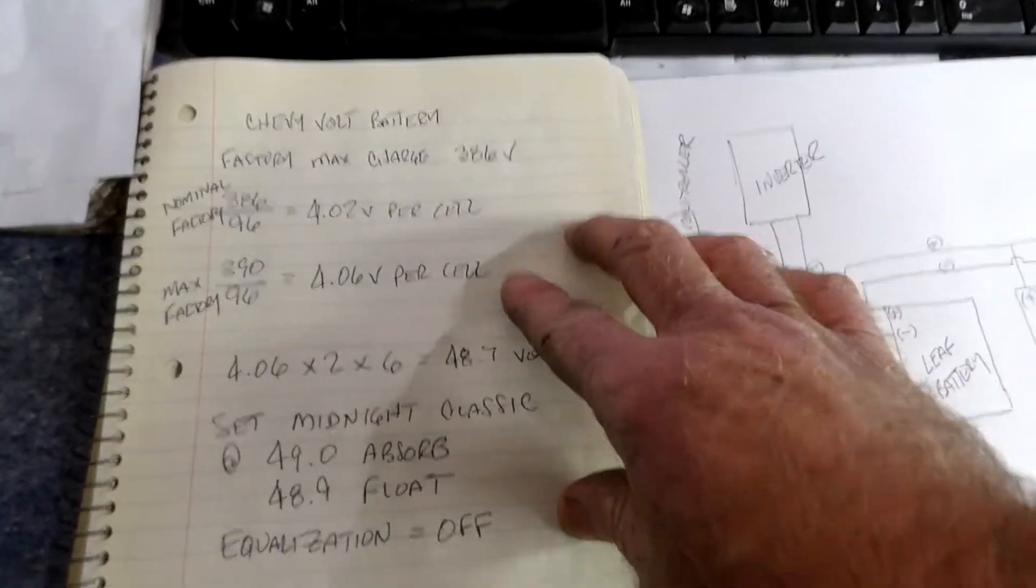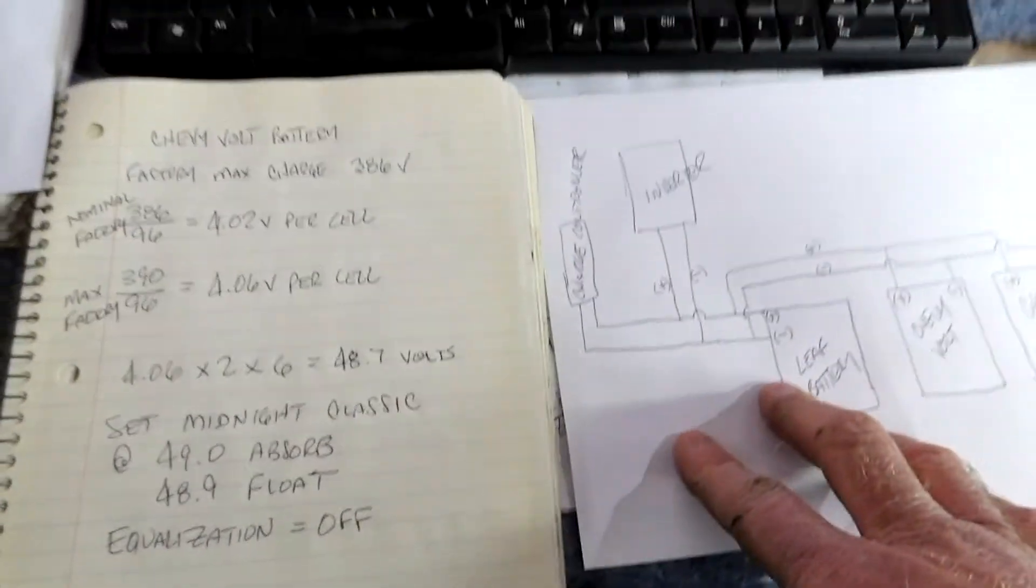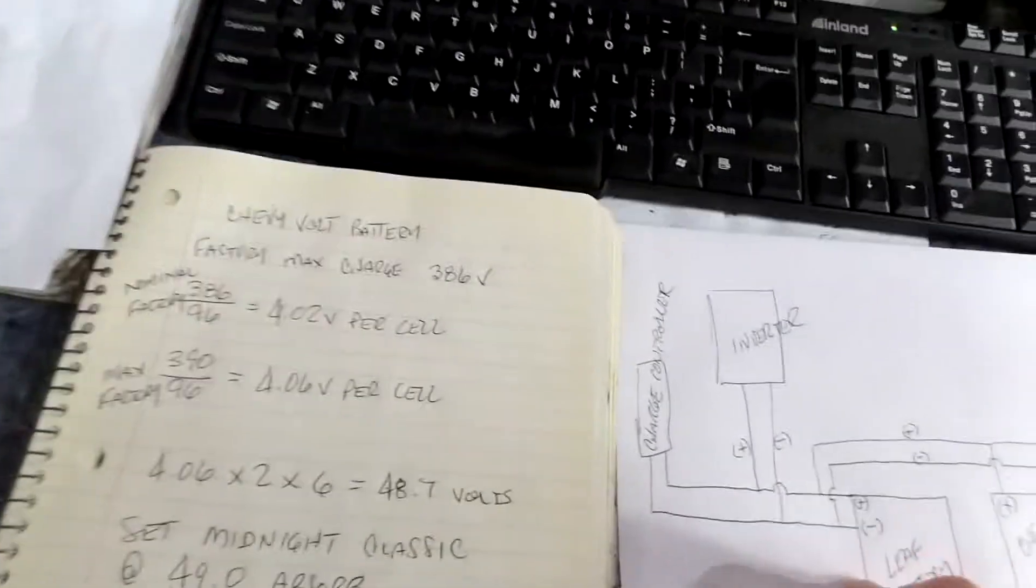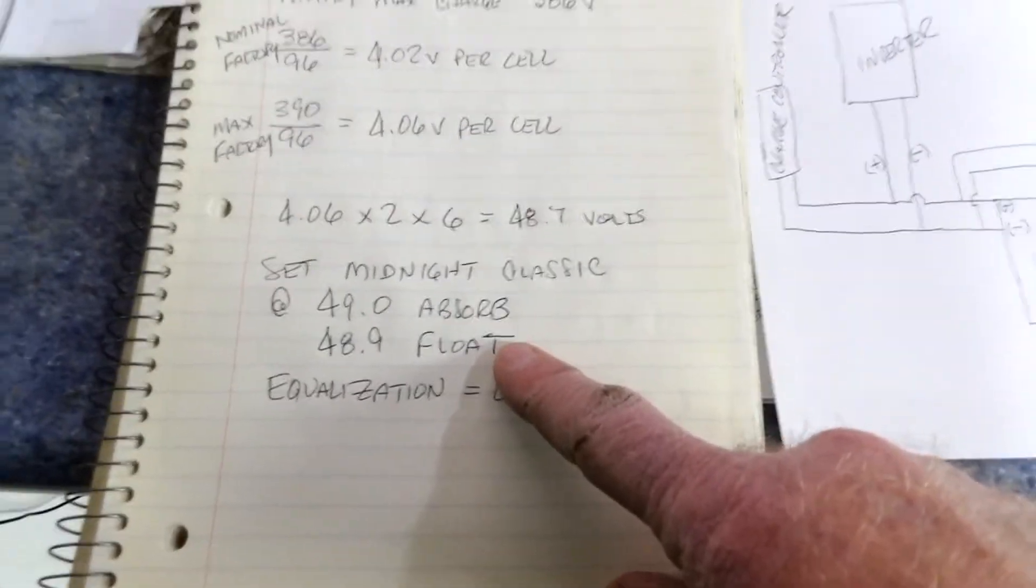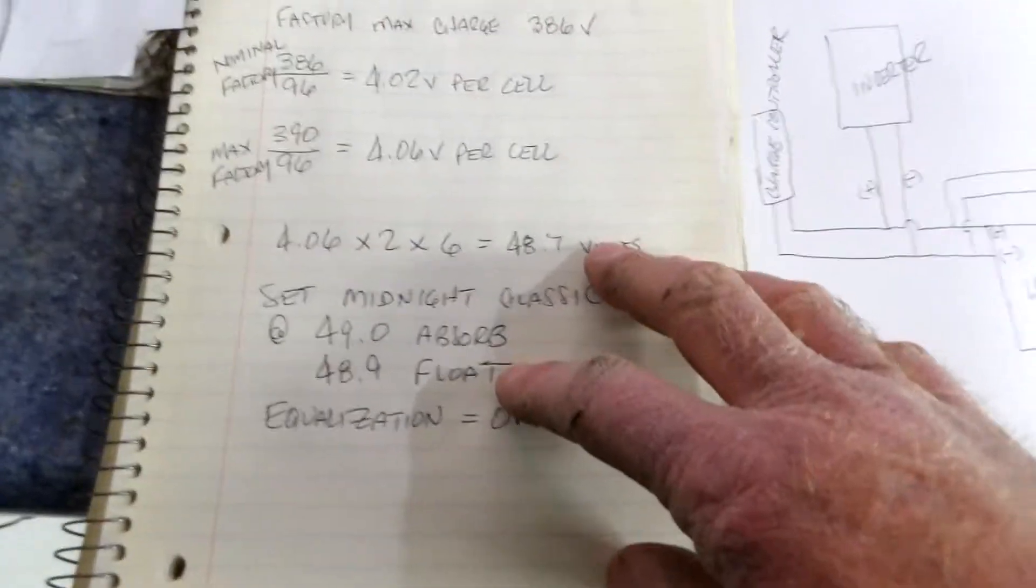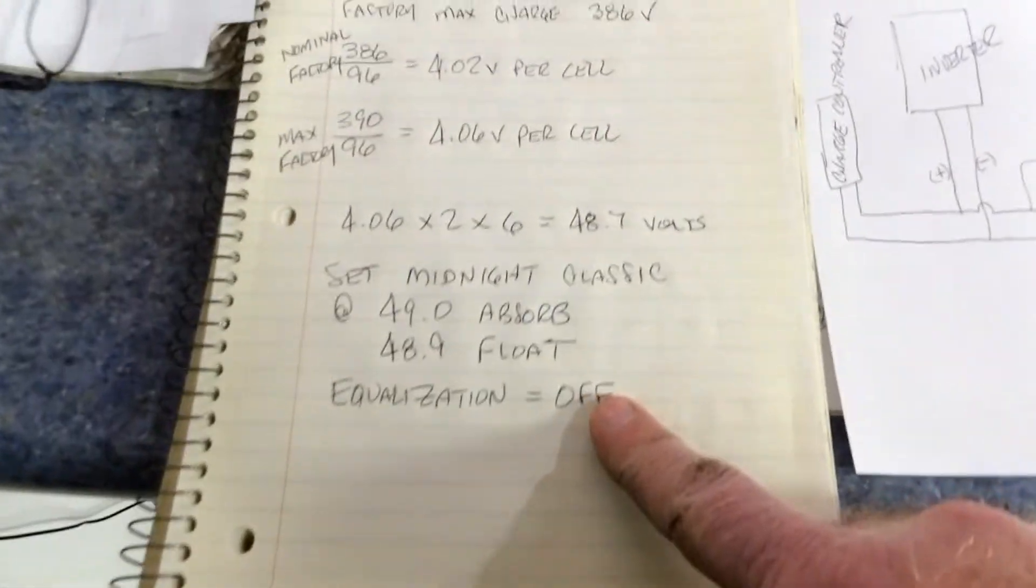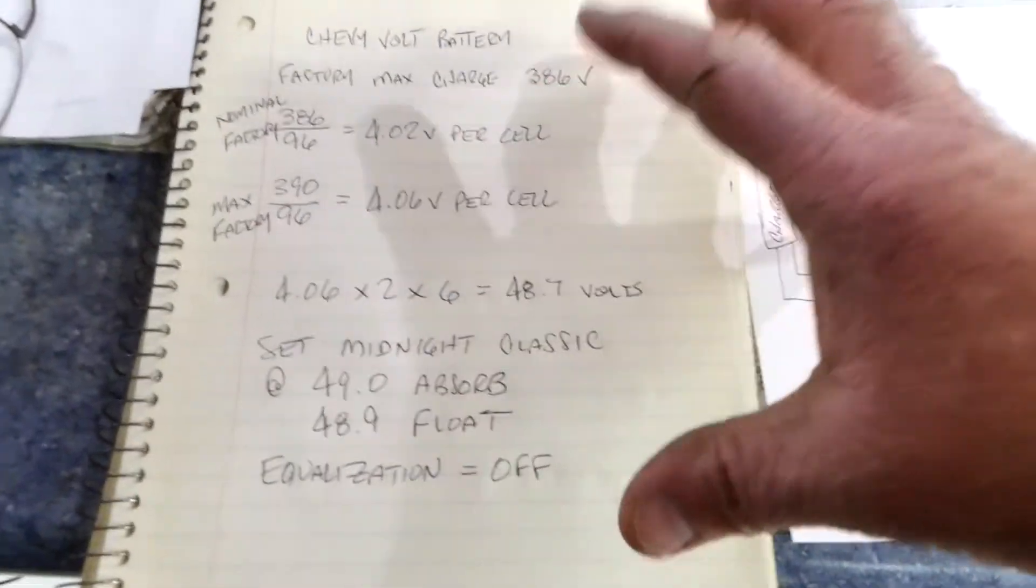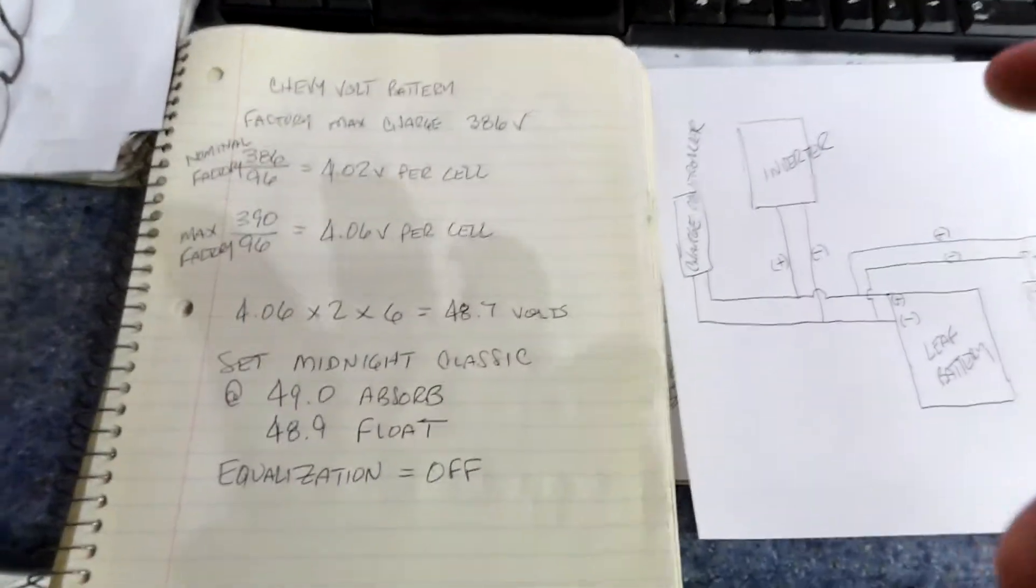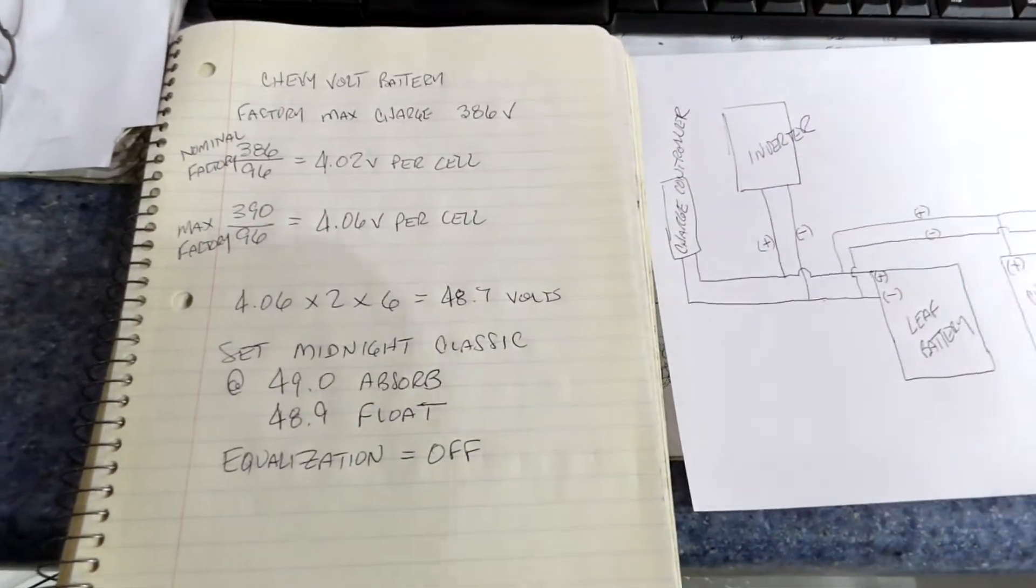So the theory here is what I've done already - I've lowered my absorb voltage and my float voltage. I've set the Midnight controllers - you can toggle through and set your absorb and your float. I have lowered them because I have so much storage now that I can take the Leaf battery and the Volt batteries and lower their maximum charge and run them at that reduced charge.